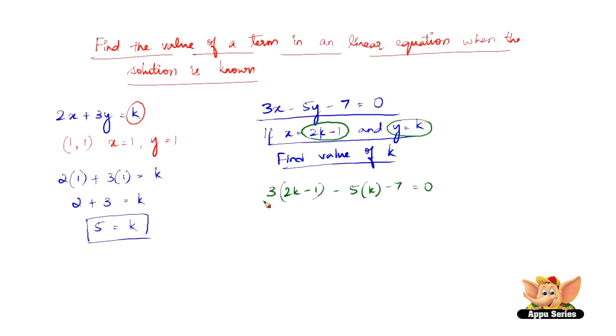So let us multiply this one first. 3 into 2k is 6k and 3 into minus 1 is minus 3. And we have minus 5 into k as minus 5k and minus 7 as it is. So 6k minus 5k is 1k, minus 3 minus 7 is minus 10, which equals 0.